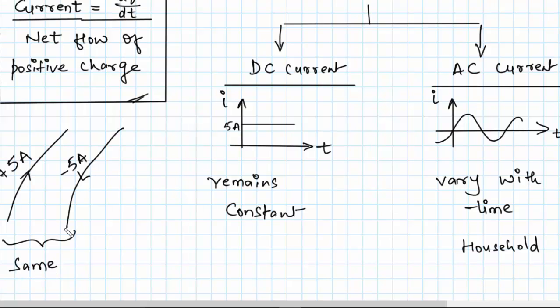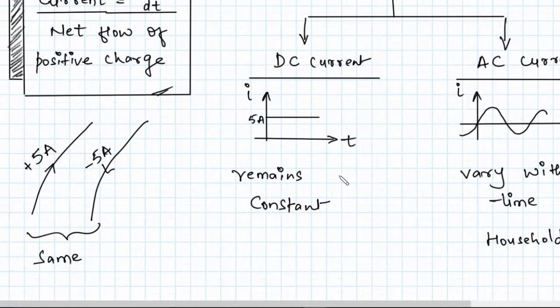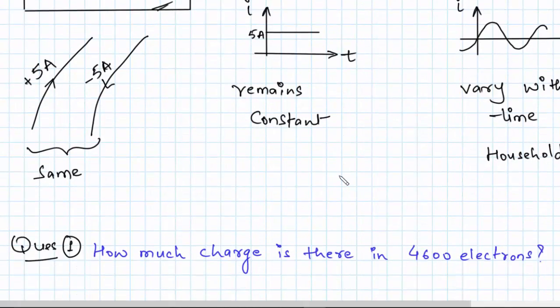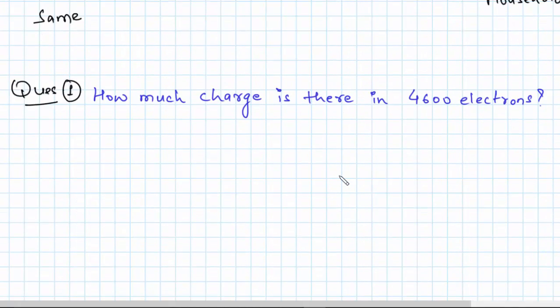So this is just a way of representing current. All right, let's try to solve some really basic problems. We have a basic problem over here: how much charge is there in 4600 electrons? Let me just solve it for you. We know that charge on one electron is 1.602 times 10 to the power minus 19 coulombs.